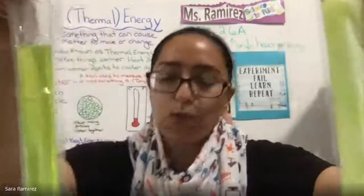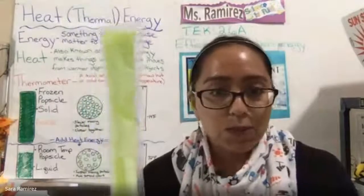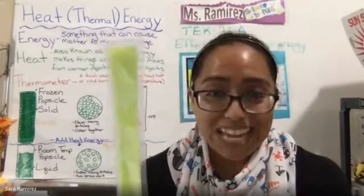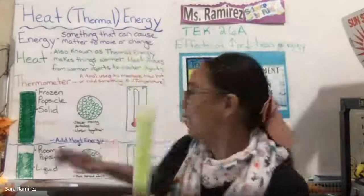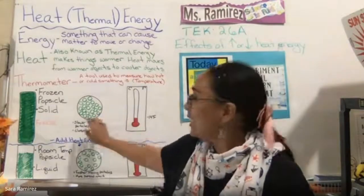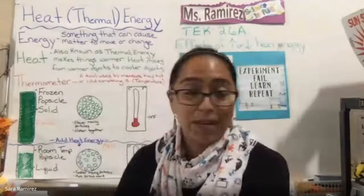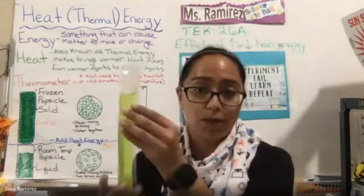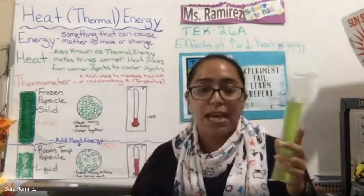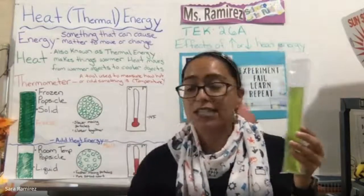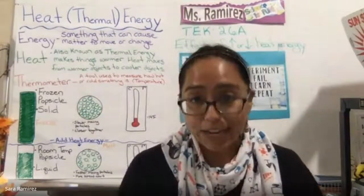Another example of how materials are affected by heat is popsicles. When I put a frozen popsicle into the freezer, I was removing heat energy — when heat energy is removed, it becomes a lot colder. The particles that make up the popsicle become much slower moving, and because they move more slowly, the popsicle solidifies or turns into a hard solid. If I leave the frozen popsicle out at room temperature, the room temperature adds heat energy, which causes particles to move rapidly, turning the solid popsicle into a liquid. That's how we get phase changes — from a change in thermal energy.